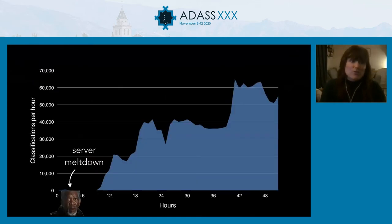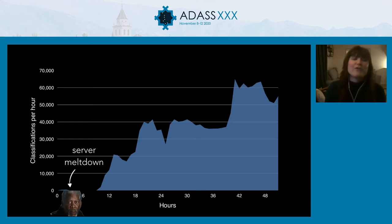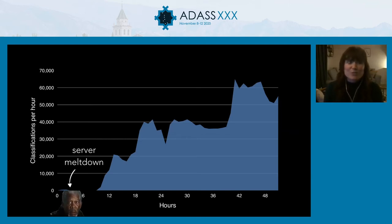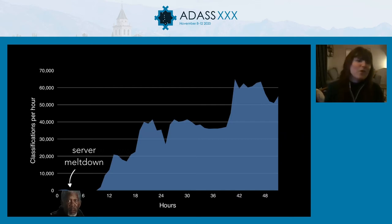Galaxy Zoo's success is because of what happened when it first launched in 2007. The astronomers involved didn't really have an idea of how popular it would be — there was actually a server meltdown after three hours of the launch, because the PI went on BBC Radio 4. It turns out the Radio 4 audience is very keen to get involved. The whole project was completed in six months with over 300,000 people classifying each of the 1 million Sloan images over 40 times each.